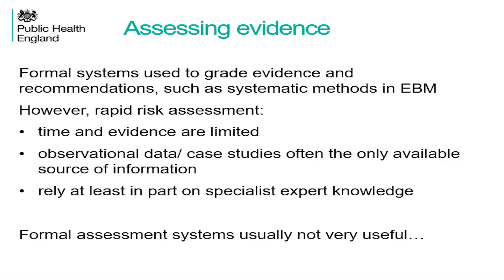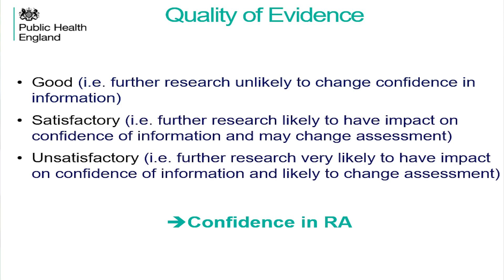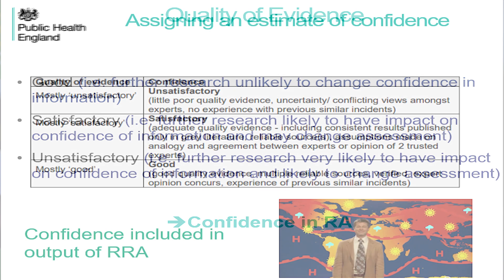There are formal systems for grading evidence, but for a rapid risk assessment we really don't have those formal systems — they don't work. Because time and evidence are limited, we have to rely on observational data or case studies and expert knowledge, where basically that gets graded really poorly. So we came up with our own grading, which has also gone into the Joint Risk Assessment — a measure of how good our risk assessment is. This is always included: the probability is low, the impact is high, and the confidence is satisfactory — meaning not particularly good data.